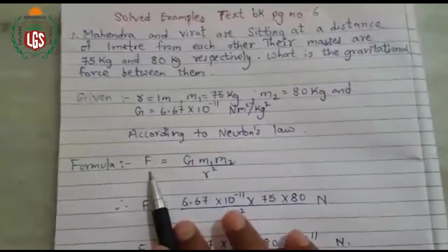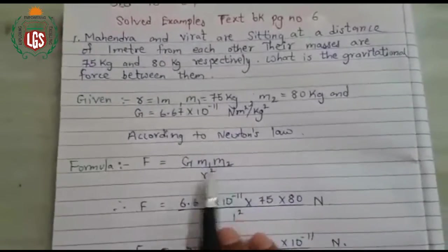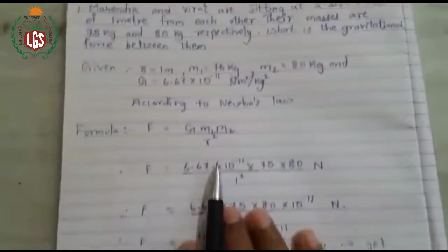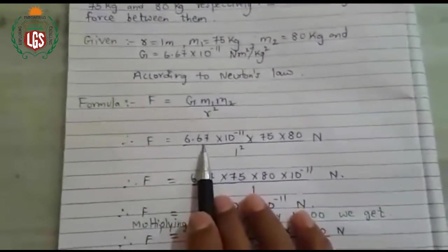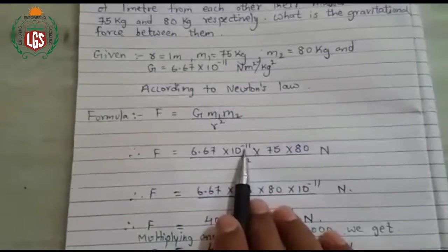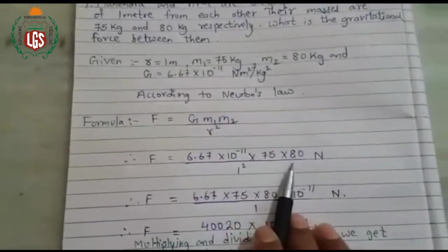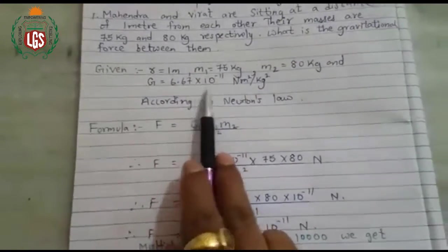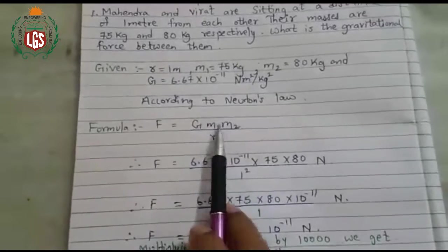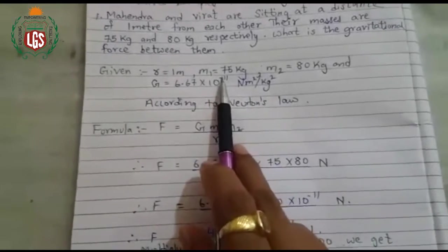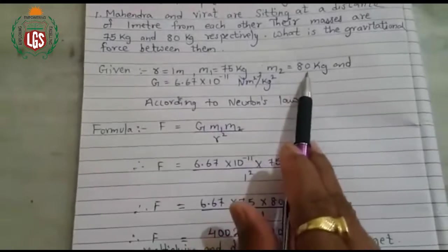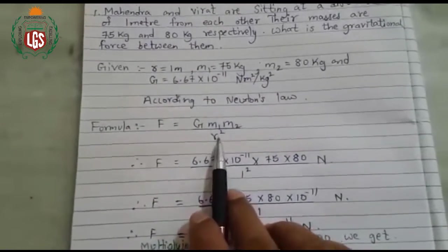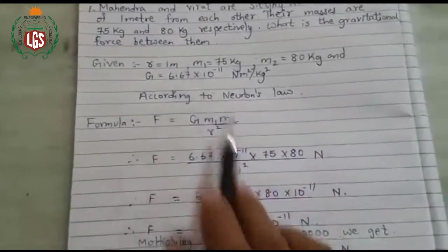That force F is given by G M1 M2 upon R square. That means this force is directly proportional to the masses and inversely proportional to the square of the distance between them. Now, force is equal to 6.67 into 10 raise to minus 11 into 75 into 80 upon 1 square.